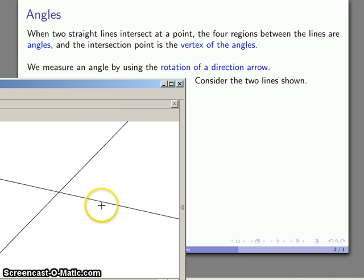And so now I have two straight lines intersecting at a point. That's going to be my vertex of the angle. And now I've created one, two, three, four distinct regions formed by the intersection of those two lines. And each of these regions is going to be an angle.